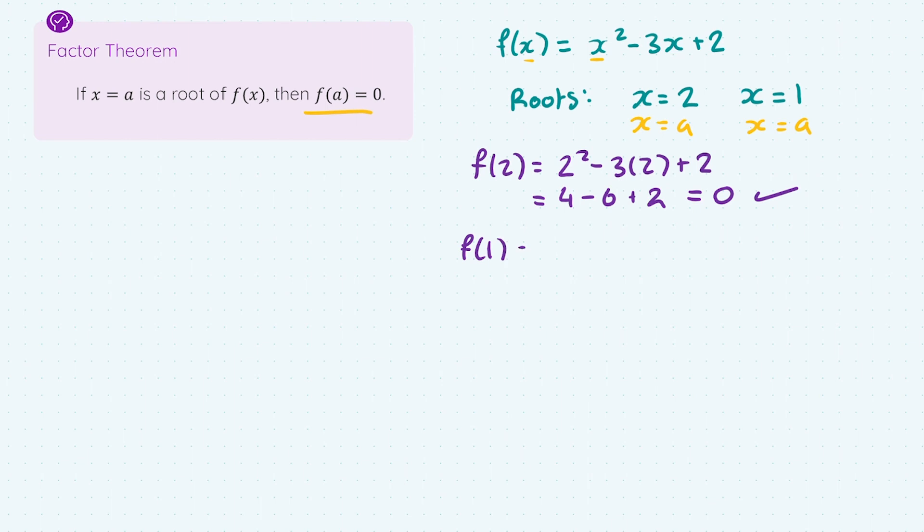Let's go for the other root of 1. We get 1 squared minus 3 by 1 plus 2, which works out to be 1 minus 3 plus 2, which does indeed equal zero. So that rule, that process, is the factor theorem. We take our root, we sub it into the function, and it equals zero.